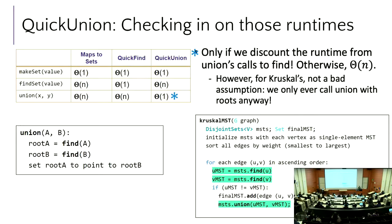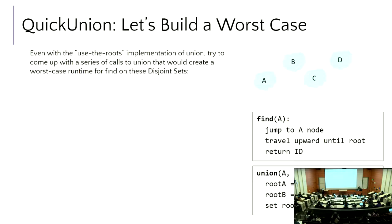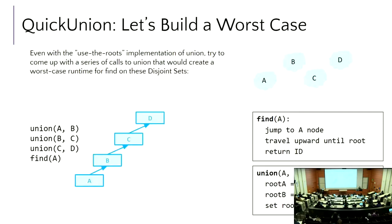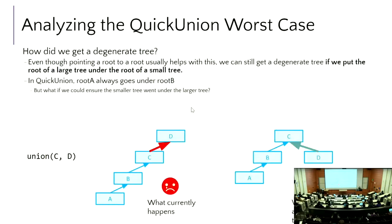Even when we use roots and do all these things, we could still create a worst-case degenerate tree scenario. If we had a disjoint set with a, b, c, d all separate and unioned them without attention to tree size — like putting the root of the larger tree under the smaller tree — we still get a degenerate tree. If we're not paying attention to how big the trees are, as we were in the practice problem, that's what creates the degenerate tree.